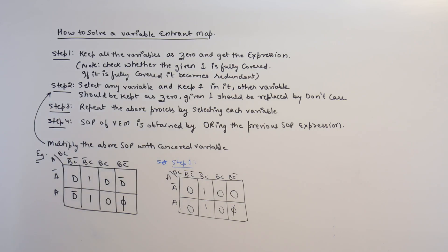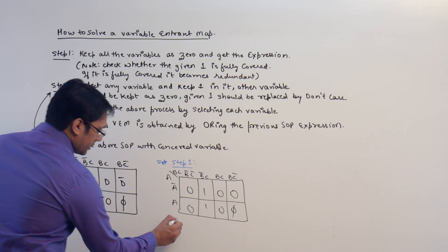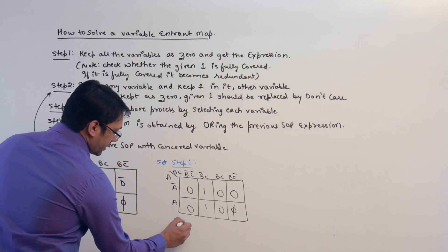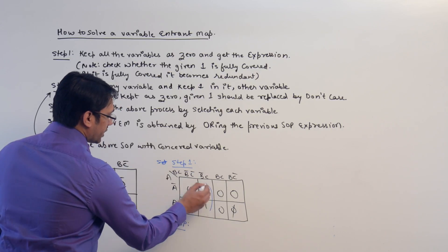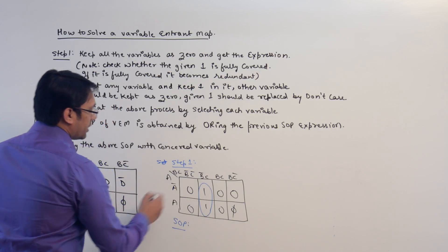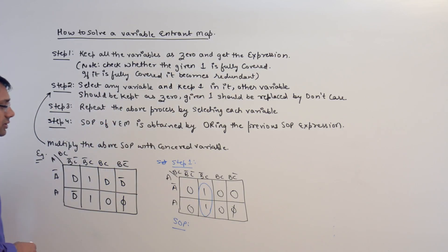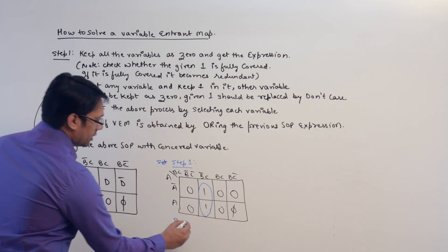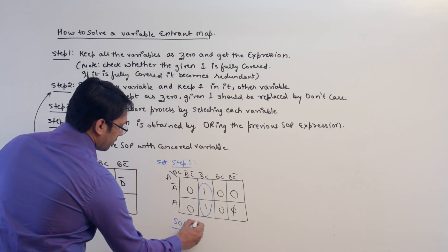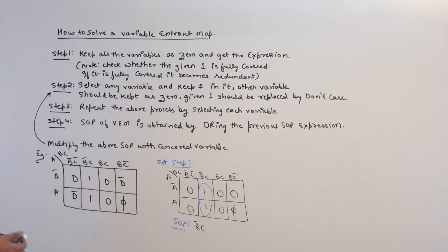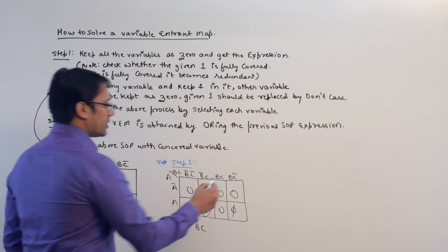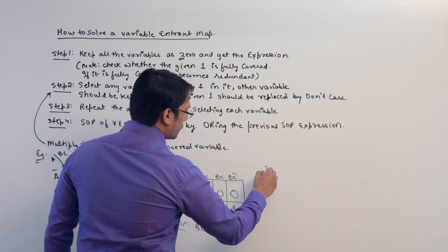Now for this, get the SOP expression. What is the SOP expression? We will be making this particular subcube. In this subcube, the SOP expression will be b complement c. And then we move on to step number two.